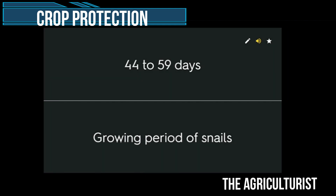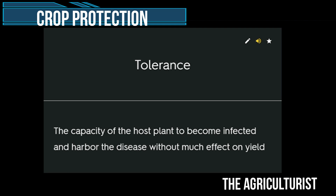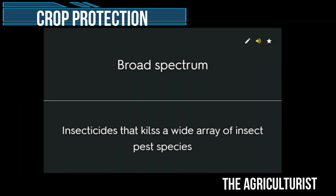44 to 59 days: growing period of snails. Tolerance — the capacity of the host plant to become infected and harbor the disease without much effect on yield. Broad spectrum — insecticides that kill a wide array of insect pest species.